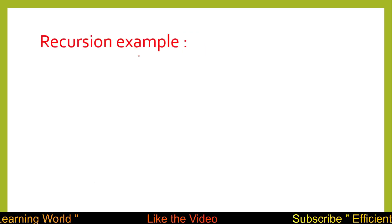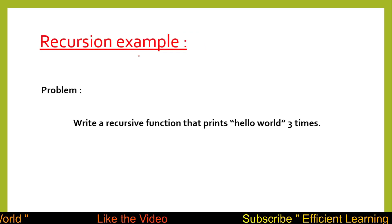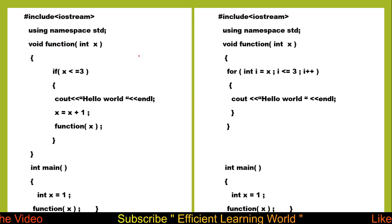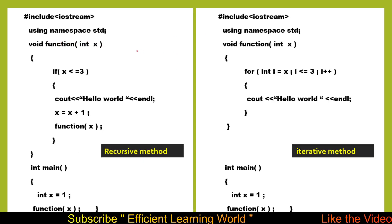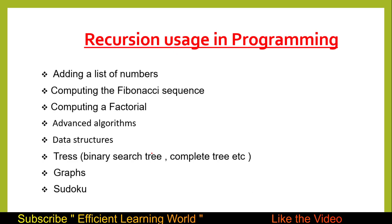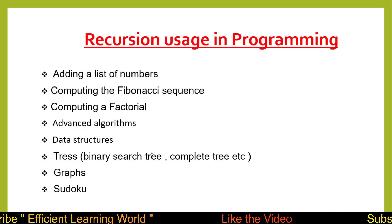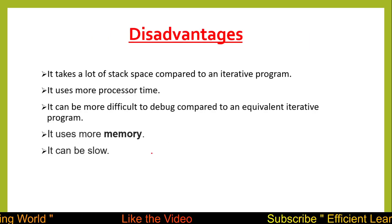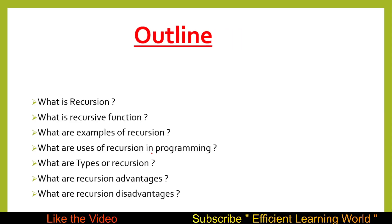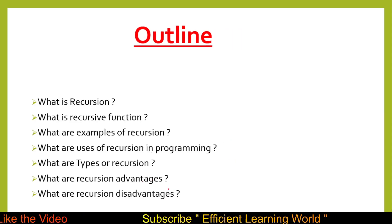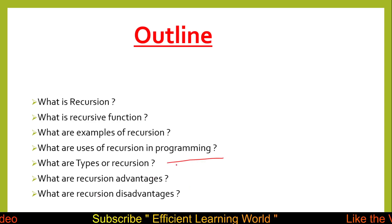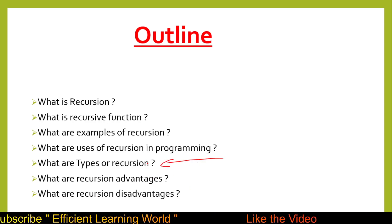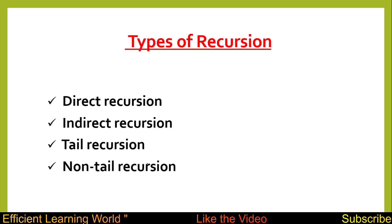We saw different examples of recursion problems and made a program to print 'hello' three times using a recursive function. We saw the difference between the recursive method and the iterative method, and discussed usage, advantages, and disadvantages of recursion. That was the outline of the previous video, but we missed the types of recursion, so I'm going to explain those now.